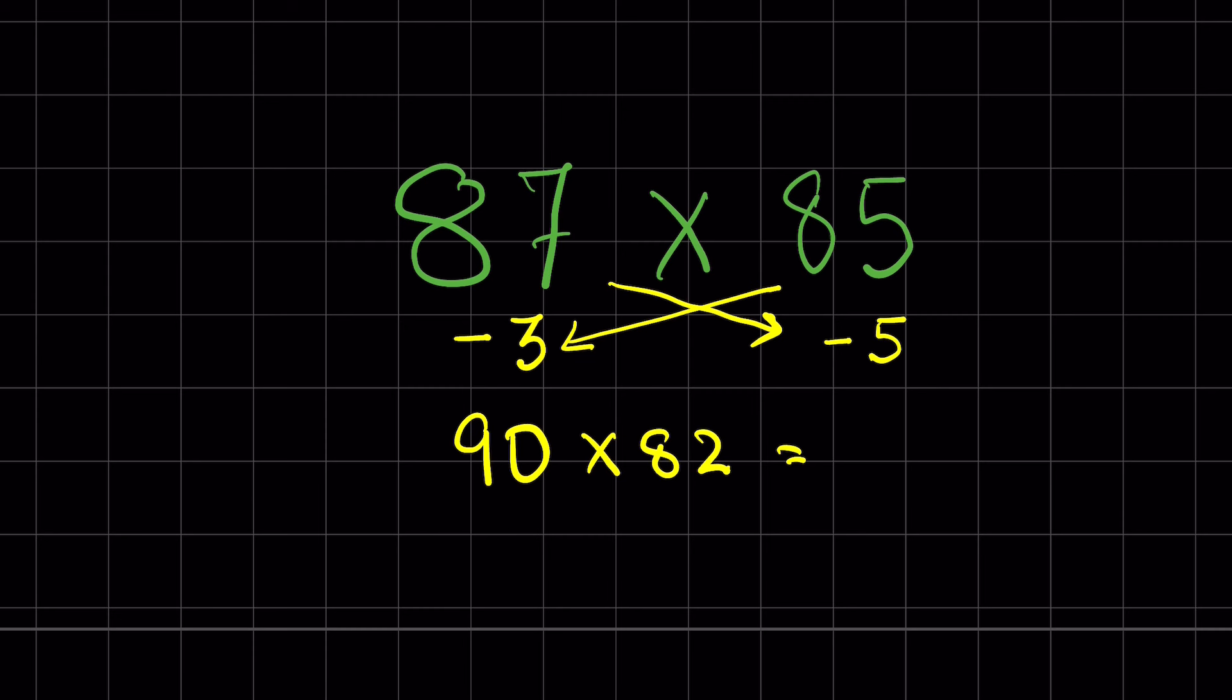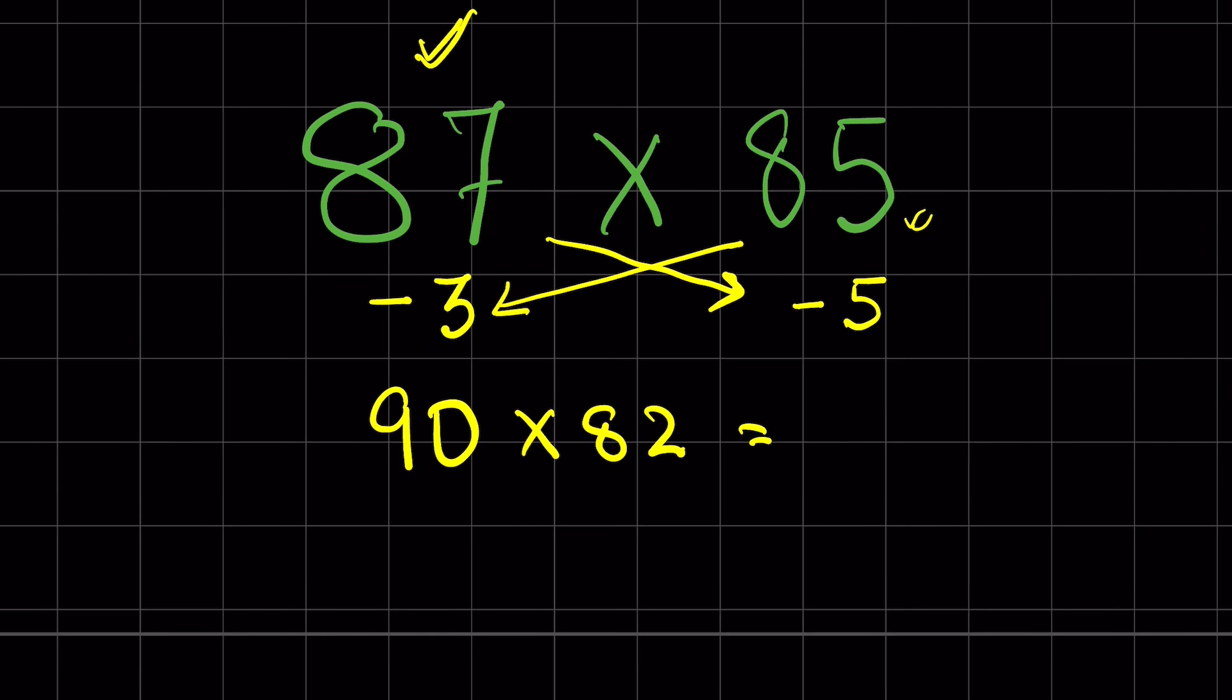You can do this in your mind without using pen and paper. You think about the number that is closer to 87 which has 0 in it, so it's 90. And how much 87 is less than 90? It's 3. So you subtract 3 from 85. 85 minus 3 is 82. You multiply 82 times 9, much easier than multiplying 87 times 85.